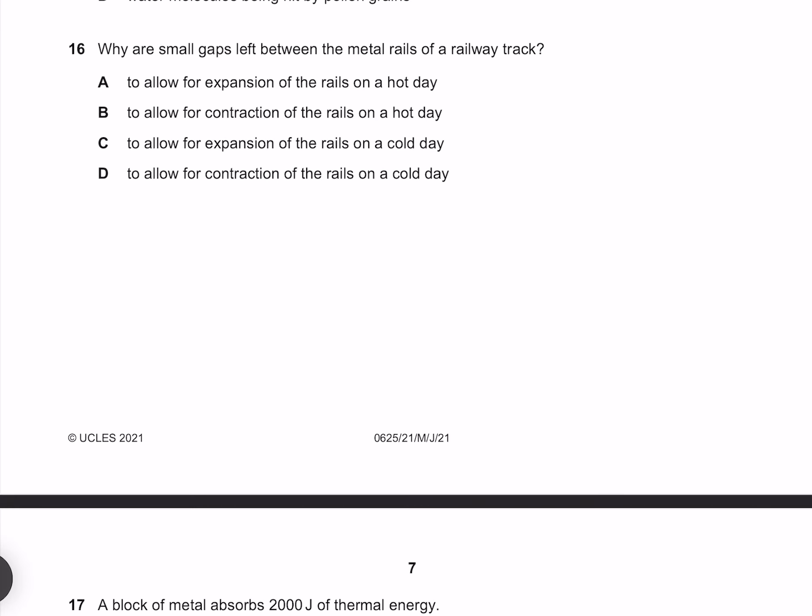Why are small gaps left between the metal rails of a railway track? Small gaps are there to account for expansion. Expansion is going to occur when the rails are heated up, which occurs more on a hot day than it does a cold day. Therefore our answer must be A.